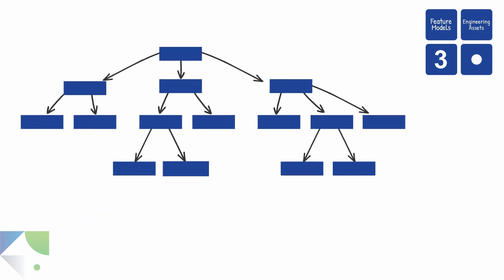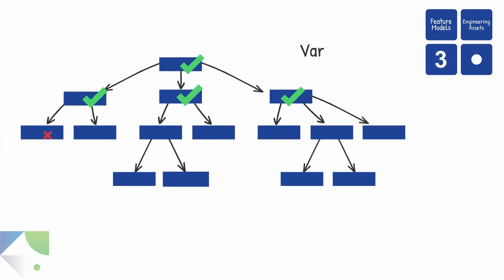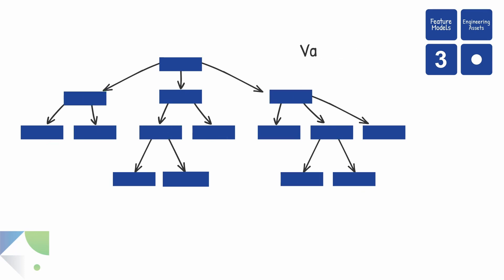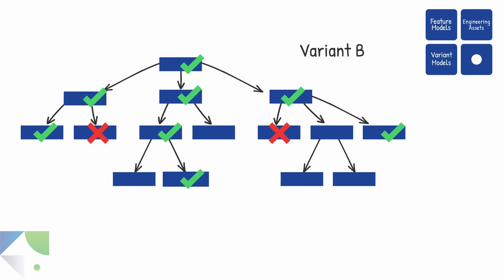In step three, configurations are created for each variant based on the feature model. With the incorporated expert knowledge, Pure Variance protects you from misconfigurations and unfeasible product variants. The configurations are called variant models.